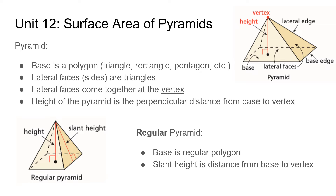A couple of terms before we get into the rest of this: slant height is what you're going to need for surface area. The slant height is the height of the triangle used to calculate surface area — you need the base and height of that triangle. We call that height the slant height. The height in the middle of a pyramid — from the vertex down to the center — is only used for volume.